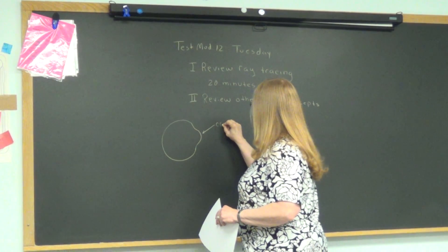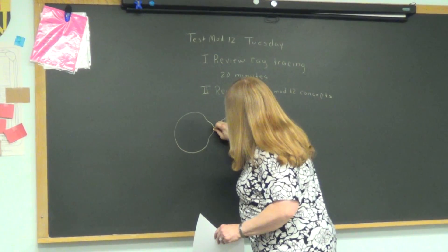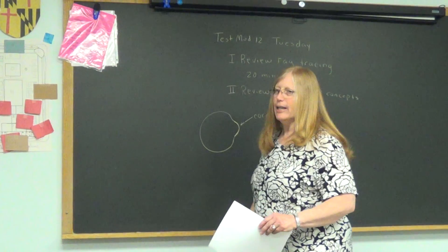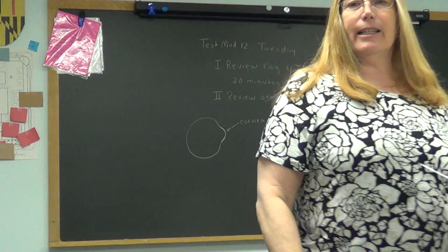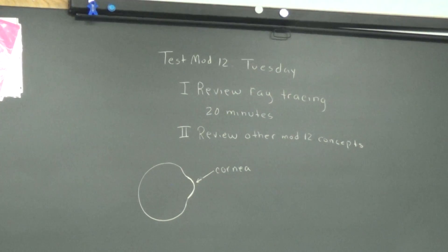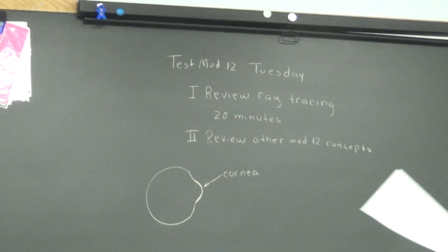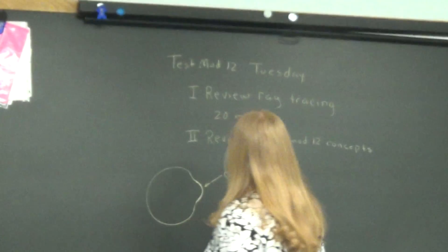The light enters the eye and starts at the cornea. This cornea is a protective layer over the eye. It will bend the light. Obviously, it's transparent. Light has to get through it. So it will begin bending the light a little bit. Light is going to bend through the cornea.